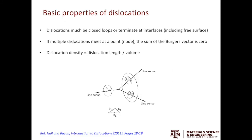After discussing the types of dislocations, let's look at their basic properties. First, dislocations must be closed loops or terminate at interfaces — you cannot have a dislocation line with both ends terminating inside the crystal. Second, if multiple dislocations meet at a point called a node, the sum of their Burgers vectors is zero; in the example shown, b1 + b2 + b3 = 0. Third, dislocation density is calculated as dislocation length divided by volume, with a common unit of 1 per micron squared.